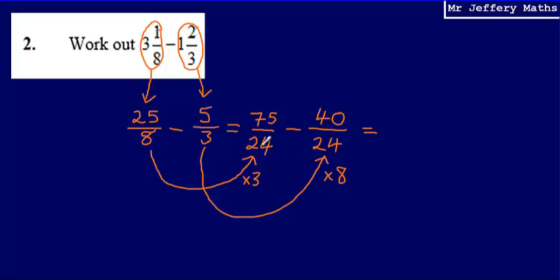So I've now got 75 over 24 minus 40 over 24. Remembering that when I'm subtracting fractions which have the same denominator, the denominator stays the same, and I'm doing 75 minus 40, which gives me 35 over 24.